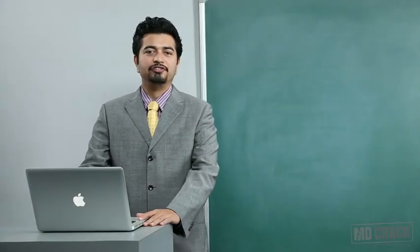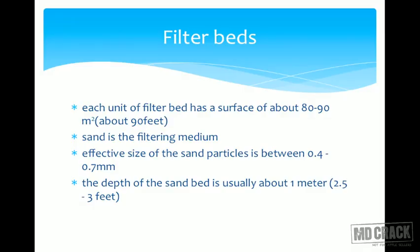Next we go to filter beds — the filter bed for a rapid sand filter. Each unit of the filter bed has a surface of about 80 to 90 meters square. As we saw, the surfaces are rather large, and 80 to 90 meters square is a huge number.